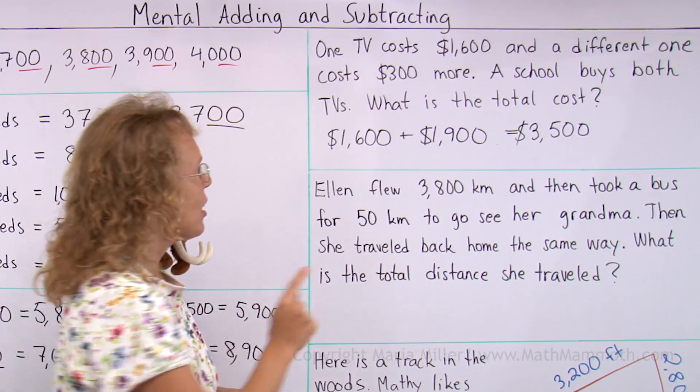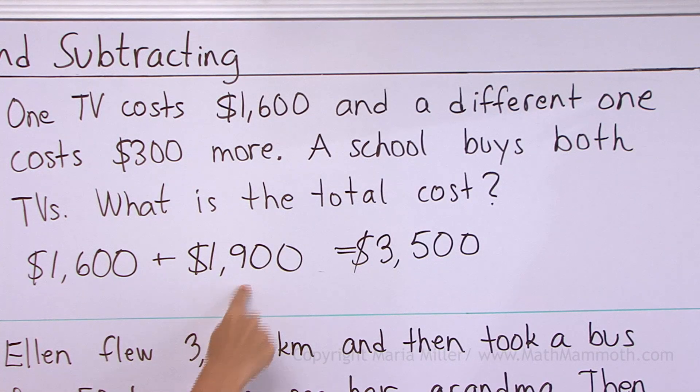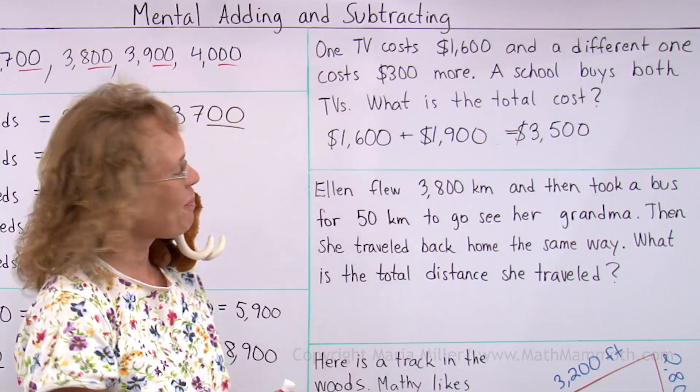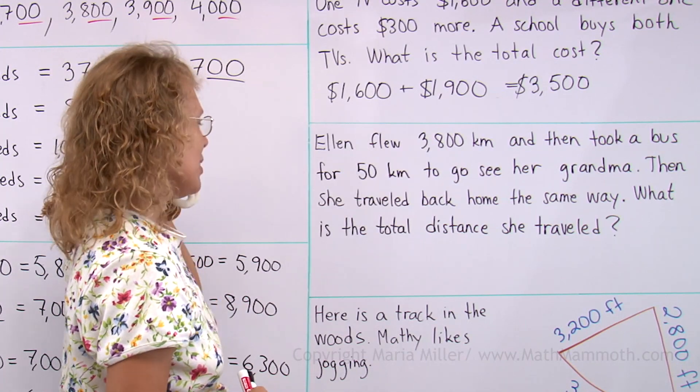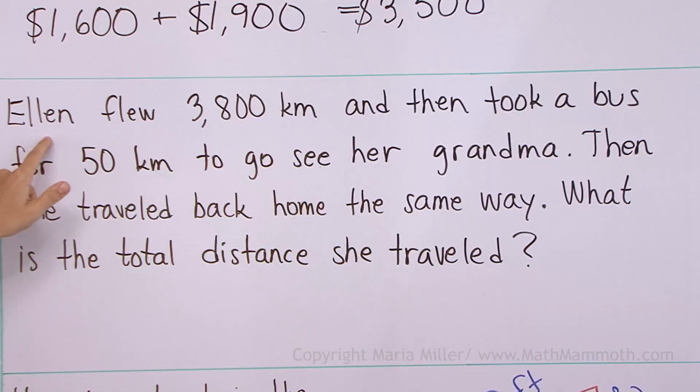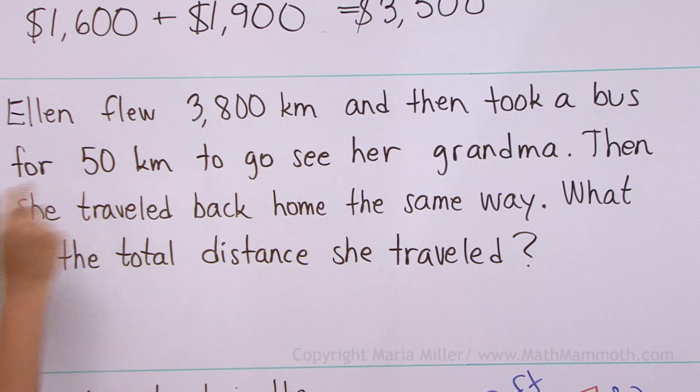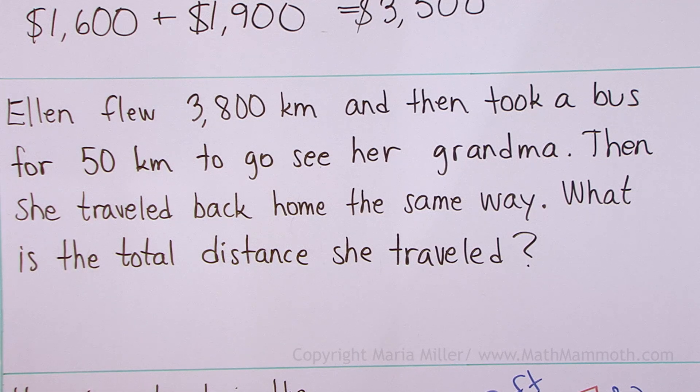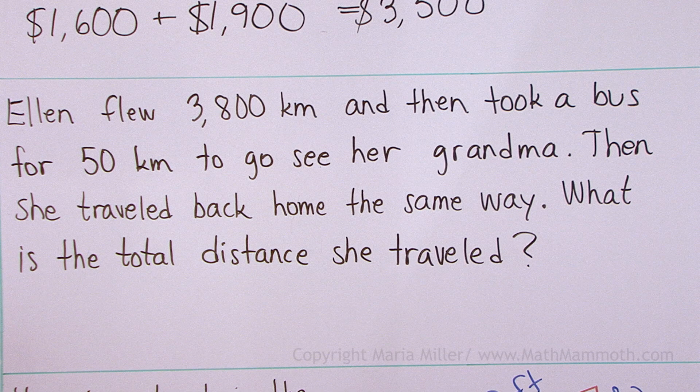And the other way, like I pointed out, you could think of 16 plus 19 equals 35. All right, here we go flying. No, not you, Matthew. Ellen goes flying. Ellen flew 3,800 kilometers. And then she took a bus for 50 kilometers to go see her grandma. And then she traveled back home the same way.